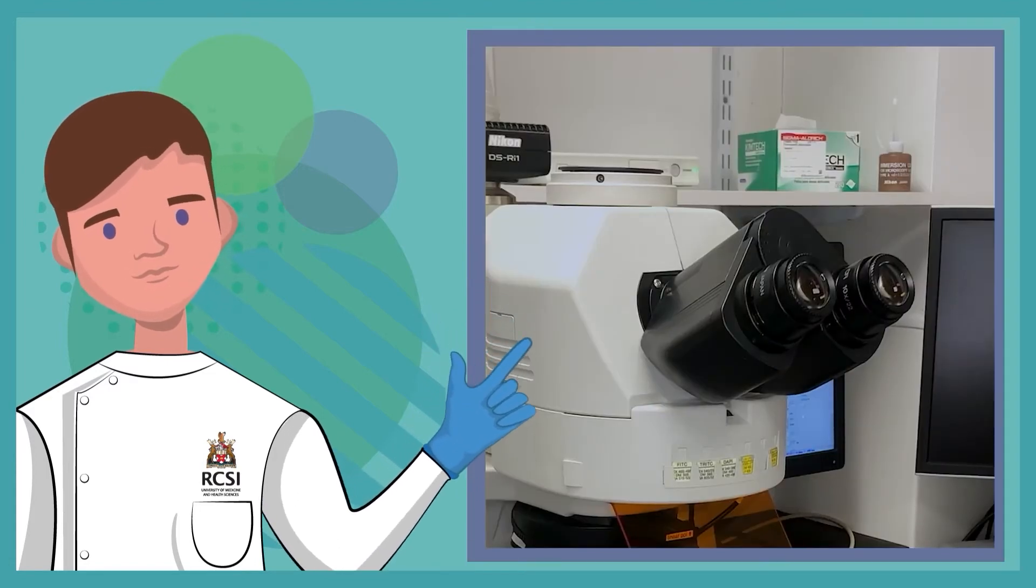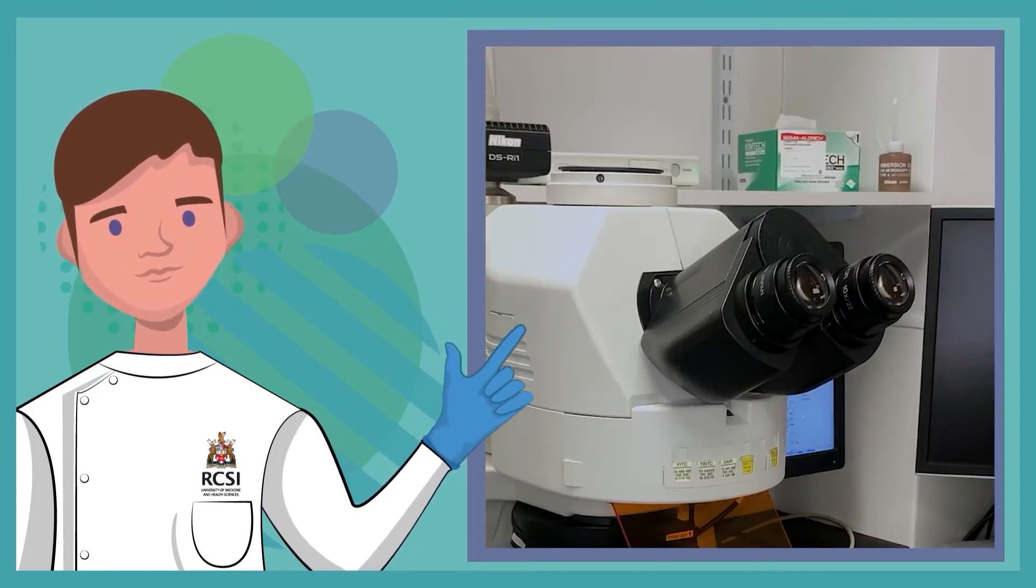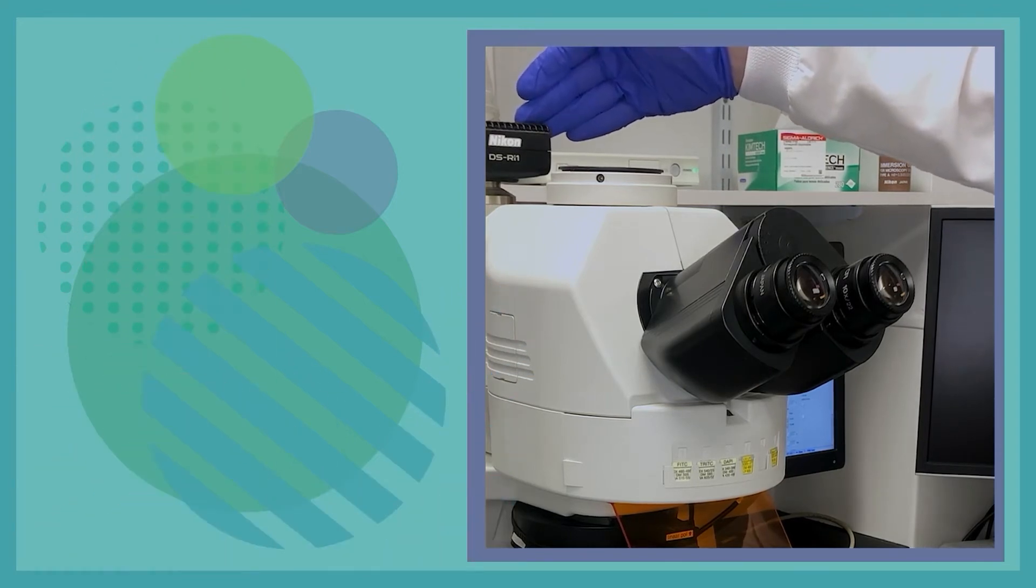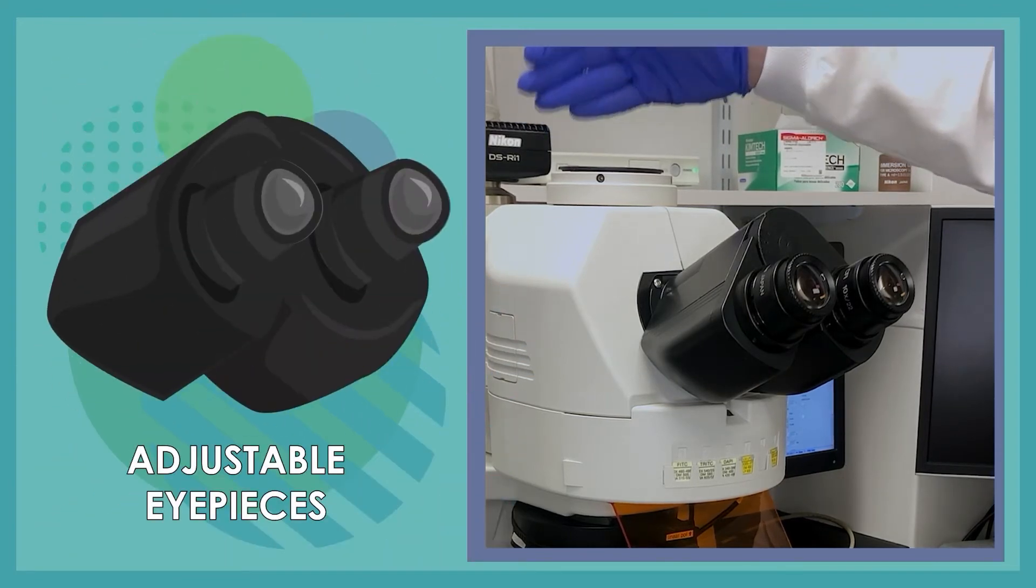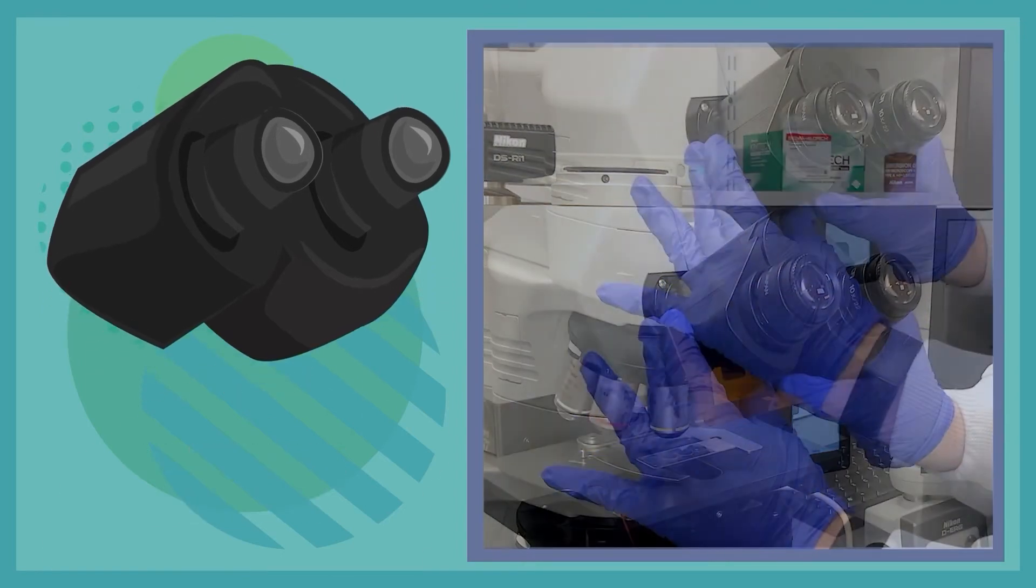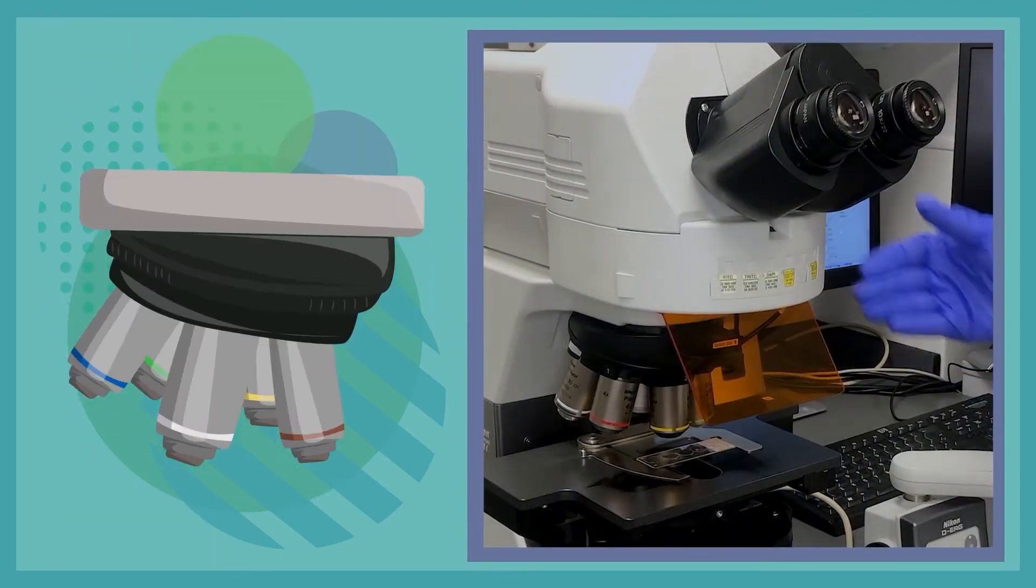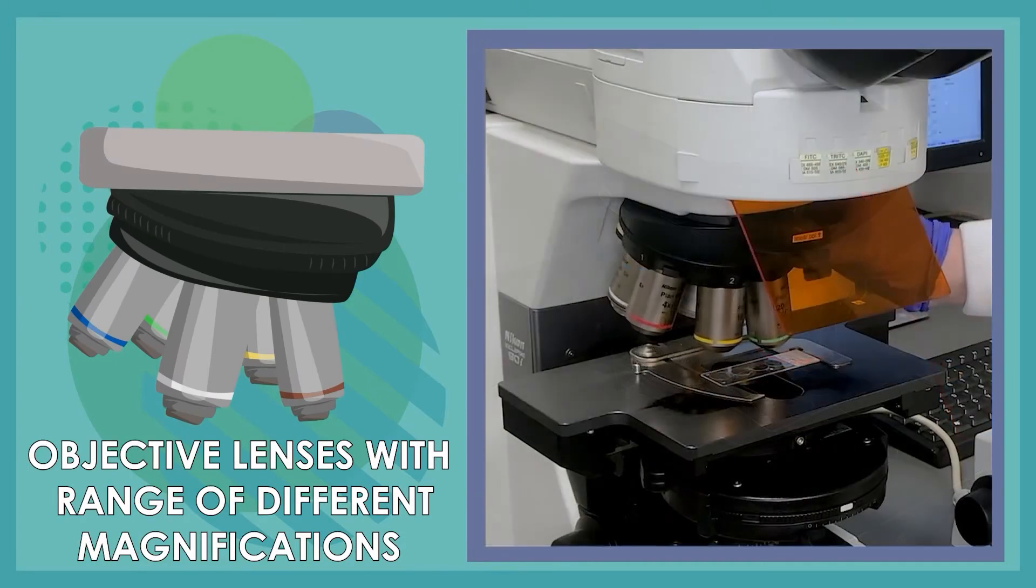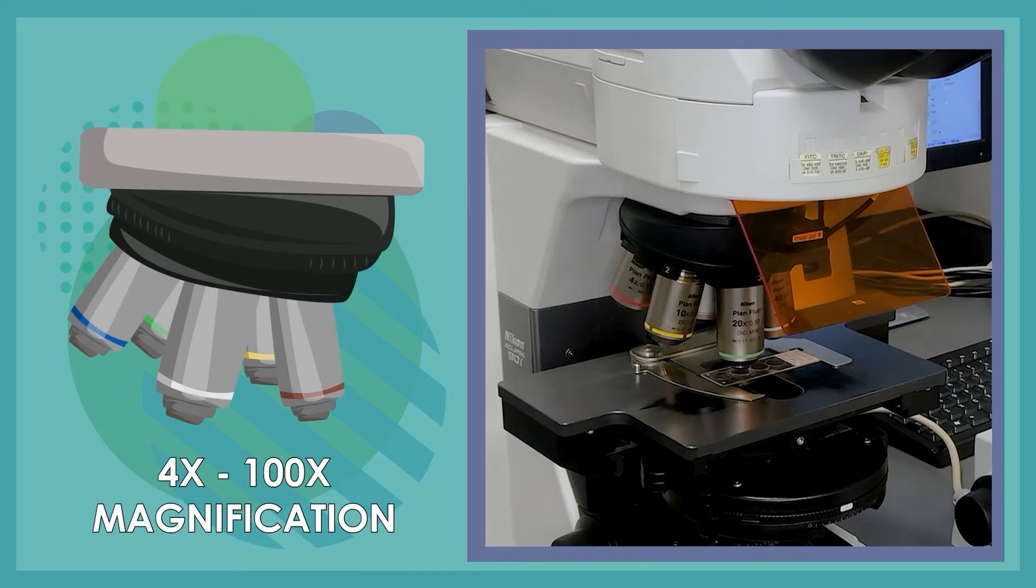Now looking at the individual components of the microscope, we'll work from top to bottom. First we'll look at the individual objective eyepieces. These can be adjusted for each user to visualize their sample. Next we have the objective lenses which come in a range of different magnifications. These magnifications can range from anywhere between 4x and 100x magnification.